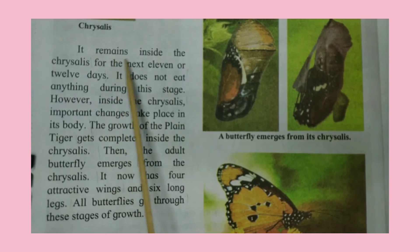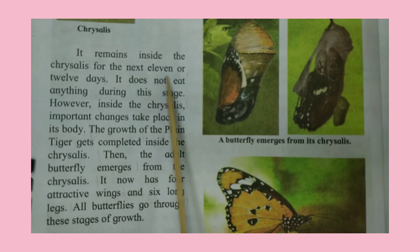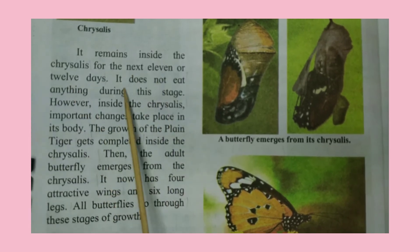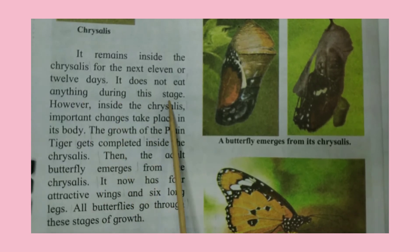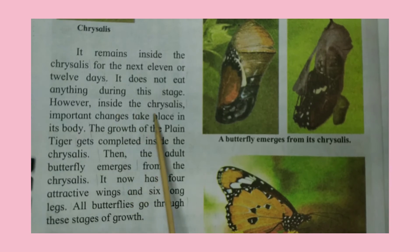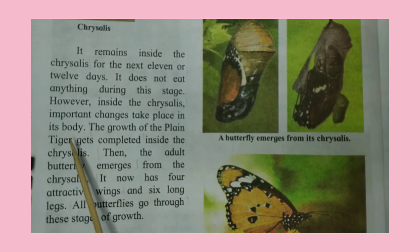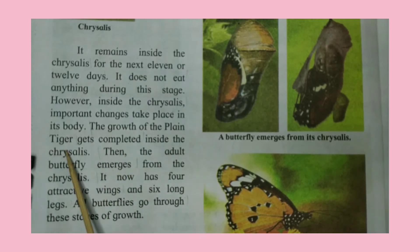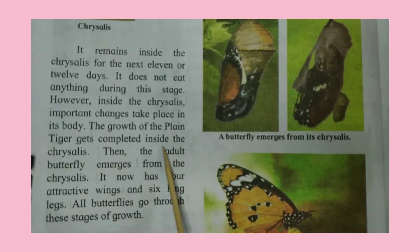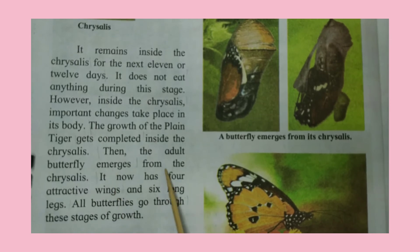It remains inside the chrysalis for the next eleven or twelve days. It does not eat anything during this stage. However, inside the chrysalis, important changes take place in its body. The growth of the Plain Tiger gets completed inside the chrysalis. Then the adult butterfly emerges from the chrysalis.